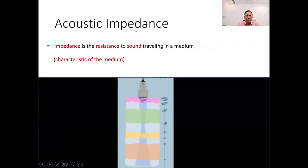Acoustic impedance is defined as the resistance that sound waves encounter when traveling in a medium or from one medium to another. Basically, it is the characteristic of the medium through which it is passing. It's a measure of how much a material of the medium resists the passage of sound waves.